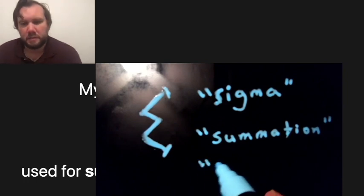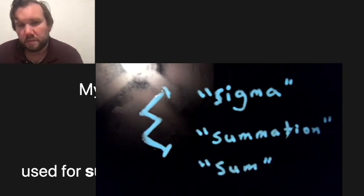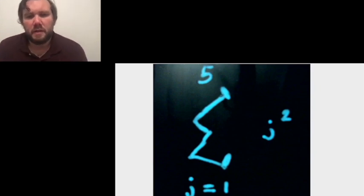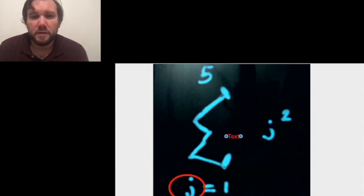You might also hear it pronounced as summation or sum. Here's an example of how you'd see it. This is the sum from j equals 1 to 5 of j squared. So let's break down the pieces. First, there's going to be an index.